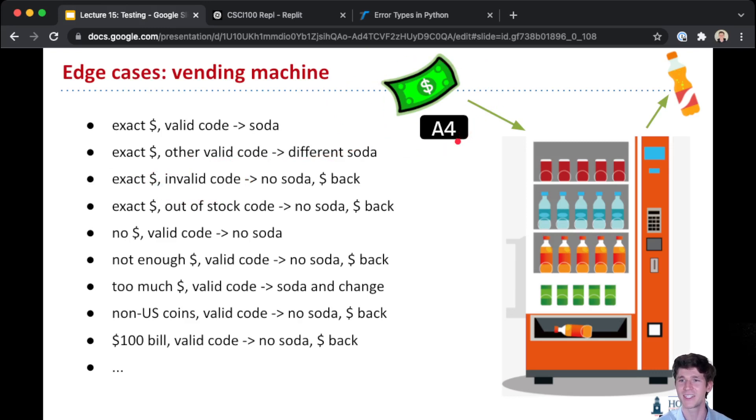Or what if you give a valid code but there's no soda for that particular number? Then you should still get your money back. If you give no money and you just put in a code, you shouldn't get soda. If you put only some money in but not enough, you shouldn't get a soda—you should get your money back. You should get change if you put in too much. If you use coins that aren't valid, you should get your coins back but no soda. So on and so forth. They're all edge cases.